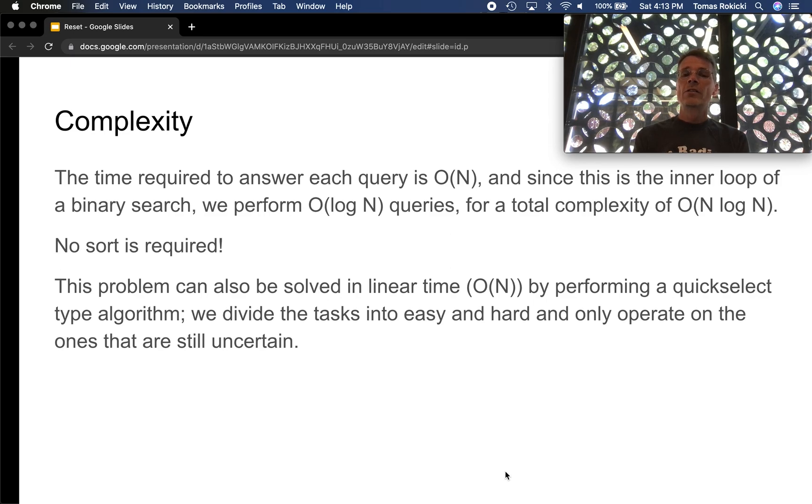The overall complexity: the time required to answer each query is O(n). We just simply walk through the tasks, calculate the R_i and W_i for each, determine whether it was an easy or hard task, and allocate effort to the total effort and also allocate effort to the last day and then check those constraints. Since this is the inner loop of a binary search we perform at most log n queries, for a total complexity of O(n log n).